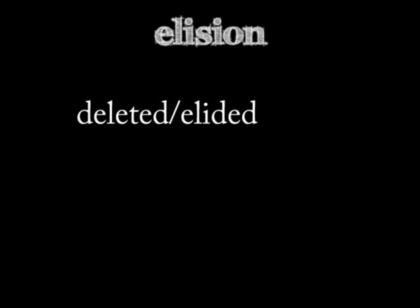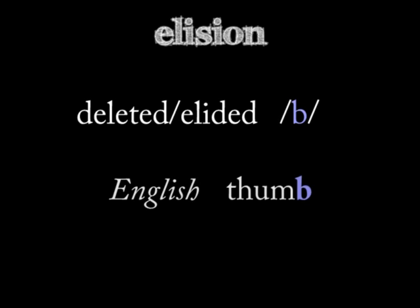Elision happens when a sound is removed from a word. The lost phoneme is said to be elided or deleted. The final B sound has been elided from the English word 'thumb' — compare the B in 'thimble.'